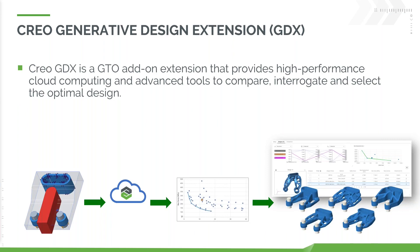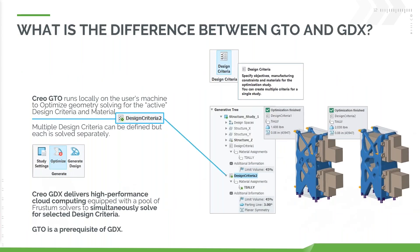In addition to that is the Creo Generative Design Extension, or GDX. This is an add-on for when you've got many different scenarios you want to analyze — you can use cloud computing to run all of those together, then interrogate and select the optimal design. GDX requires GTO as a base. The key difference is: GTO runs locally on the user's machine to optimize geometry and solves one active design criteria at a time, while GDX solves multiple criteria simultaneously using cloud compute.